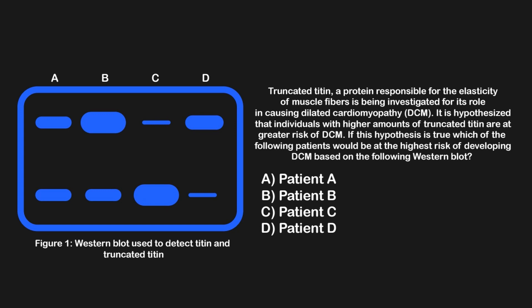To start, let's break this question stem down a bit. Here we are told that truncated titin, or a shorter version of titin in high amounts, is thought to lead to DCM. Then we are asked to find the patient who has the highest risk of developing DCM. Said another way, we need to find the patient with the largest amount of truncated titin.